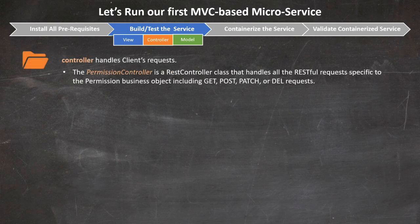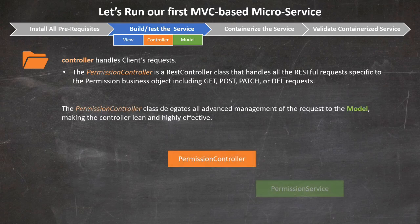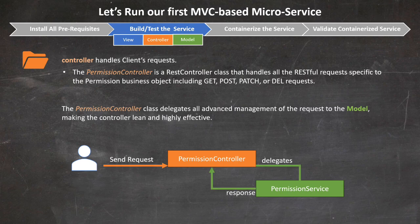In the first iteration of our service, the permission controller class handles all requests specific to the permission business object, including the GET, POST, PATCH, and DELETE requests. The permission controller delegates all advanced management of requests — with the exception of validating the received payload — to the model and the permission service class.